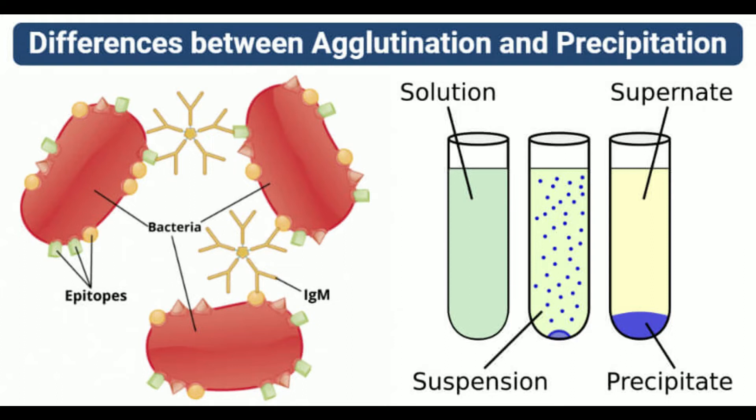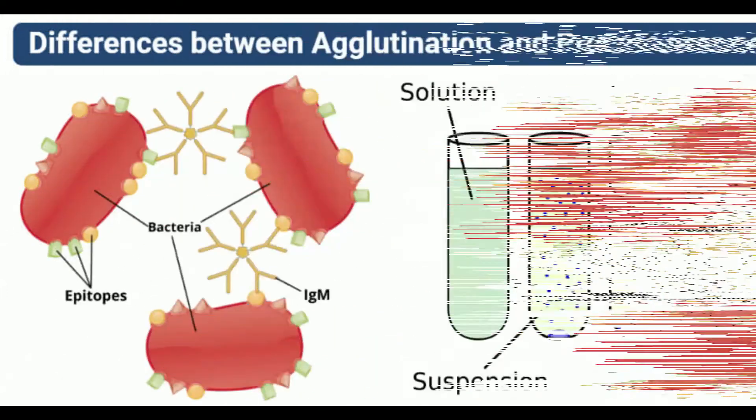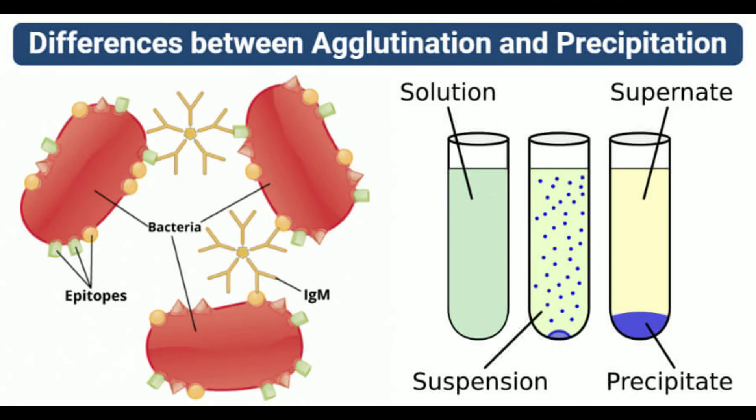Precipitation is a process where soluble antigens bind with their specific antibody at an optimum temperature and pH, resulting in the formation of an insoluble precipitate. The interaction between the soluble antigen and antibody results in the formation of an insoluble lattice that forms a precipitate out of the solution. The process of precipitation has some requirements involving the valency of both the antigen and the antibody.